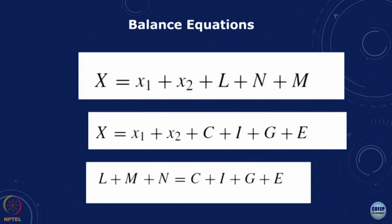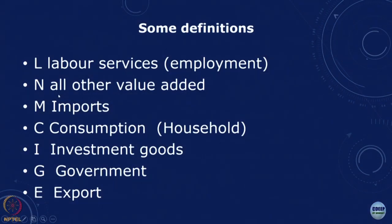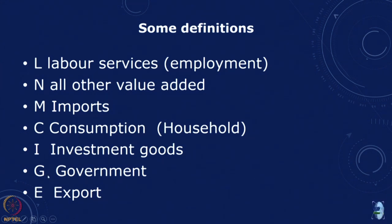These are the balance equations for the two sectors: x equals x1 plus x2 plus x — the balance equation for the row and the balance equation for the column. If we look at these sectors, L is labor services, employment, and all other value added, and M is imports. All of these come under each sector in the column. In the row, there are additional final demands in terms of consumption, investment goods, government, and export. So f equals c plus i plus g plus e, and this is the payment sector which is the additional thing that comes in the column.